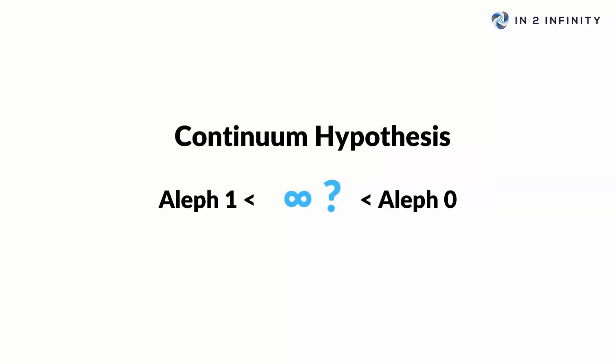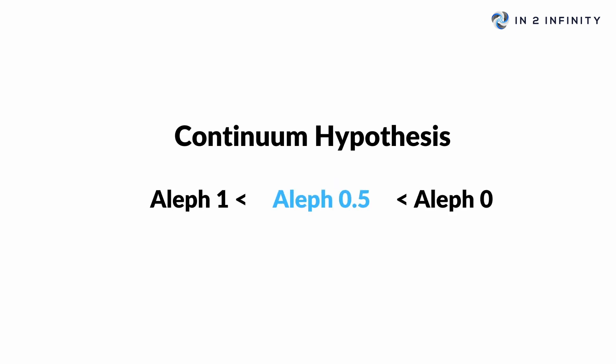So that's resolved the continuum hypothesis. The question was: is there an infinity that lies between Aleph 0 — the infinity of all numbers — and Aleph 1, which is the infinity of the whole number set? And there is an infinity between the two, and it's the fractional numbers between 0 and 1. That proves that George Cantor's conjecture — that there isn't an infinity between these two — wrong. There is actually one, and it's called Aleph 0.5.